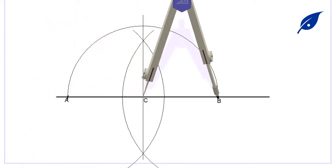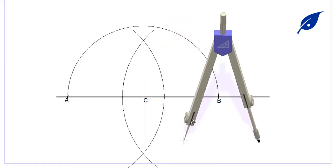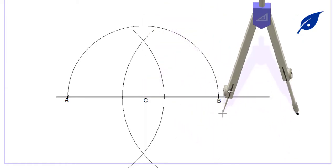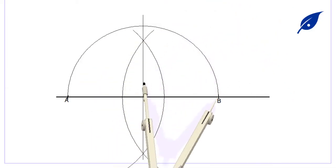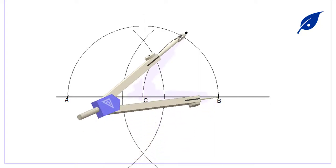After getting this semicircle, we put the center of our compass on B. Then we're going to create an arc from C to touch this semicircle.